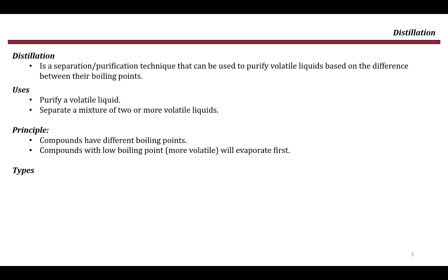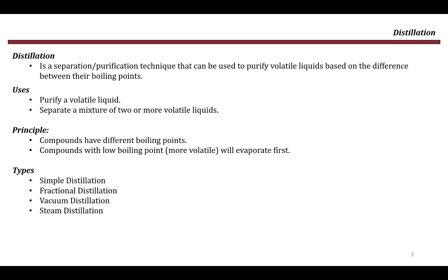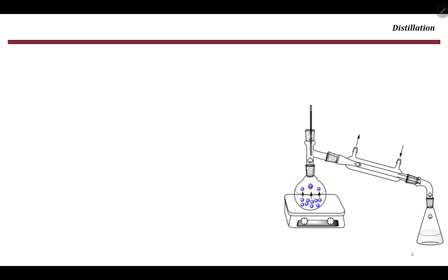There are several types of distillation: simple distillation, which is the simplest and easiest; fractional distillation; vacuum distillation, which is done under zero pressure; and steam distillation, which is used in the presence of water to remove certain organic compounds with very high boiling points. We will focus on the first two types: simple distillation and fractional distillation.